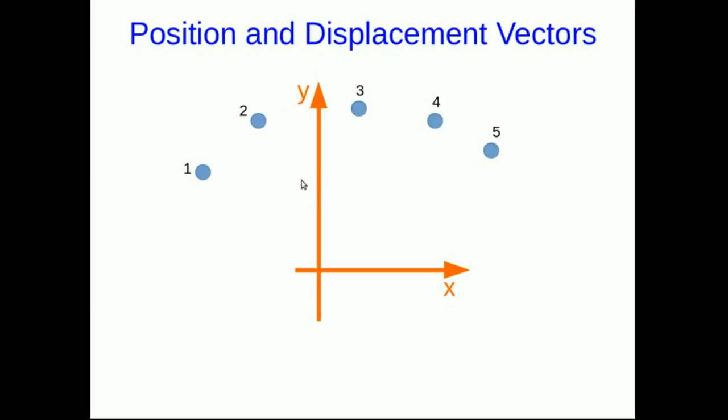So a position vector tells you how to find the location from the origin of the coordinate system. So the position vectors for points two and three would be drawn this way. They point from the origin to the location that you're talking about.